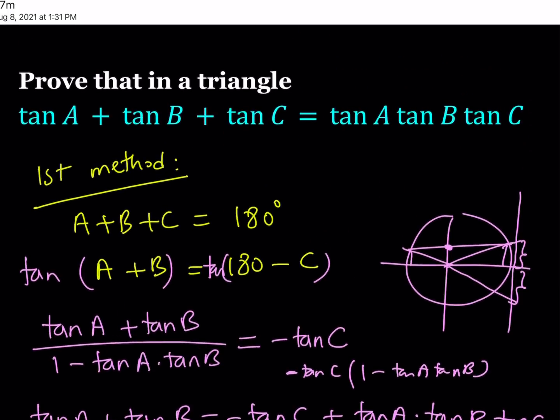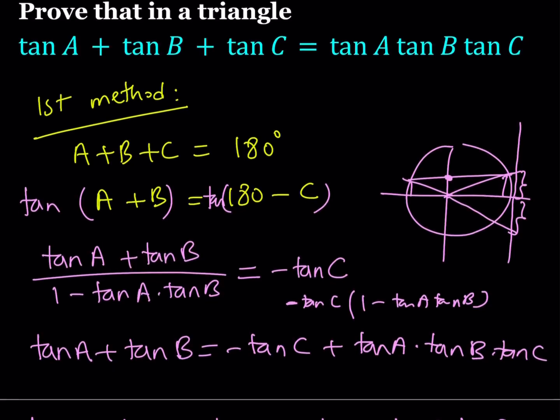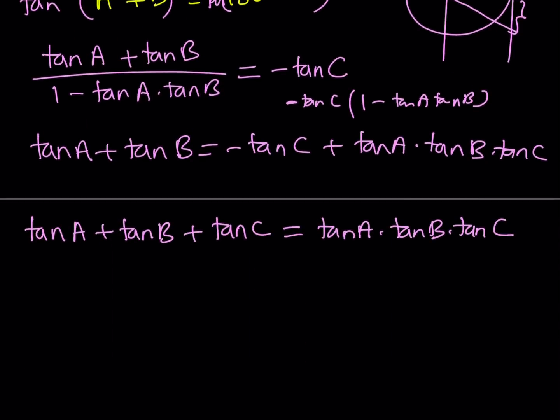We were trying to prove that in a triangle this is always true, and it is. Now, what happens if A, B, or C is 90 degrees? We get a situation where tangent of that angle approaches infinity, and both the right-hand side and the left-hand side approach infinity if you are talking about limits.